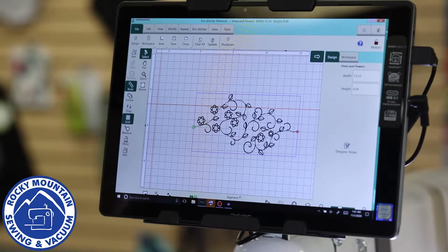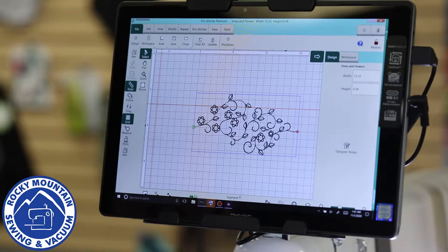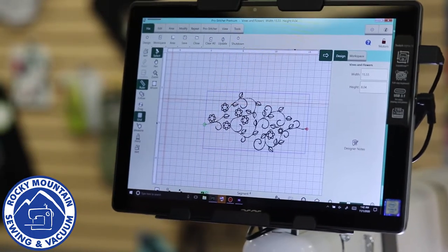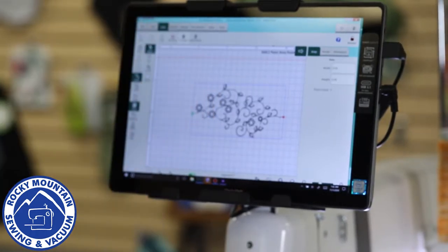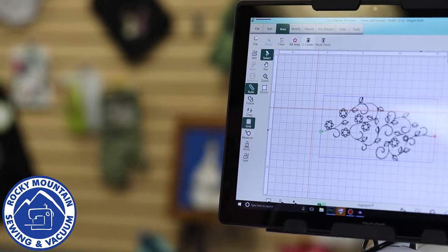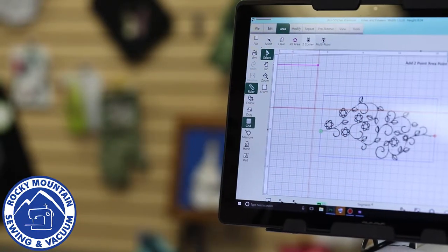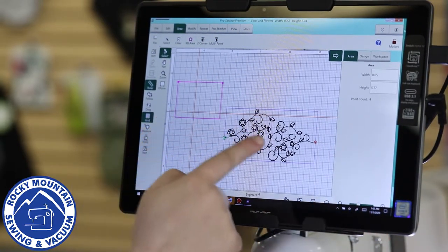Now what I can also do is define an area where I want something. On my quilt I've actually got a box stitched out here, so I'm going to bring the machine to the top right or left corner, go to area, hit two corner, bring it to the next one, hit two corner, and then if I press home now I can see my area in my design.